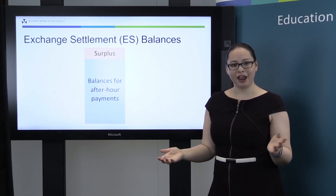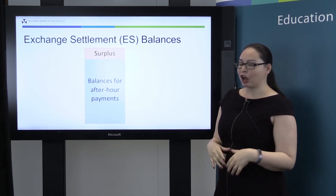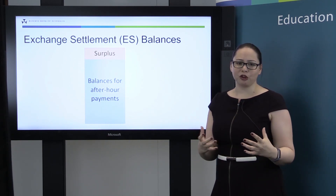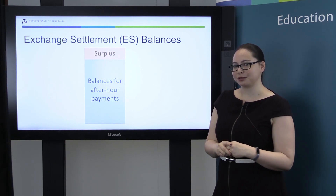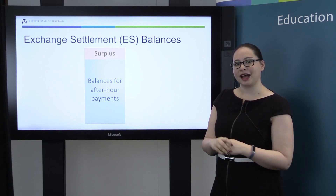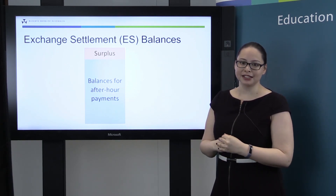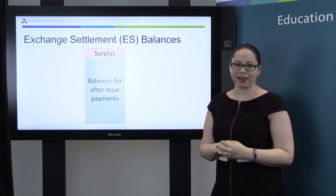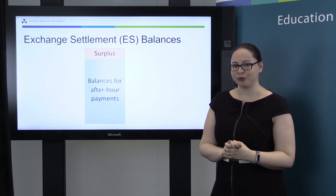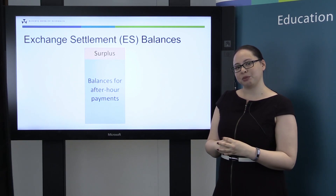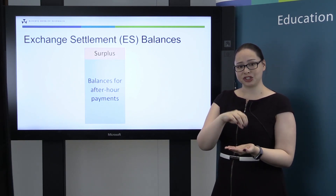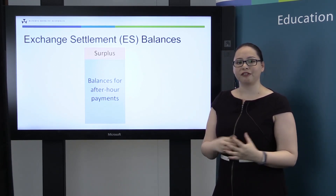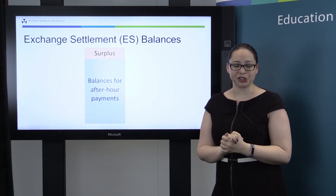Bank A's account would be debited, and Bank B's account would be credited. Now most ES balances are actually held for balances after the close of the cash market. These have no monetary policy impact, so we can ignore these for the purpose of this presentation. A very small portion of these ES balances are what we call surplus ES balances. They're held for banks to meet their payment obligations and any ad hoc increases in demand — they're really there to make sure the payment system runs as smoothly as possible. If you add up the surplus at each individual bank, the total of these balances would be the supply of cash in the market, or the supply from that supply and demand diagram.